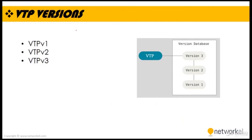Let's go ahead with the VTP versions. We have 3 versions: VTP version 1, VTP version 2, and VTP version 3. VTP version 1 is the default VTP mode. VTP version 2 is similar to VTP version 1, but additionally supports token ring. VTP version 3 provides more security enhancements with the capability of supporting extended VLAN ranges.